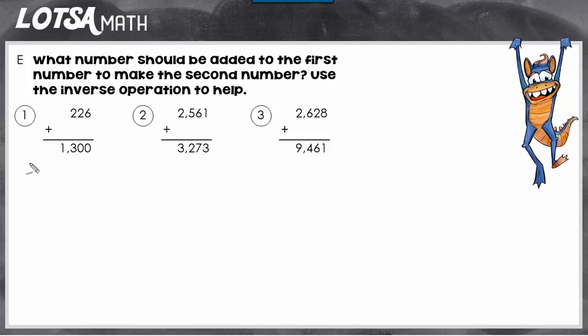If we think about this as a subtraction problem and use the same digits from the fact family, we know that the subtraction problem is going to start with the largest number in the addition sentence. So we're going to start with 1,300. And then if we subtract 226, we'll find the third number in this number sentence.